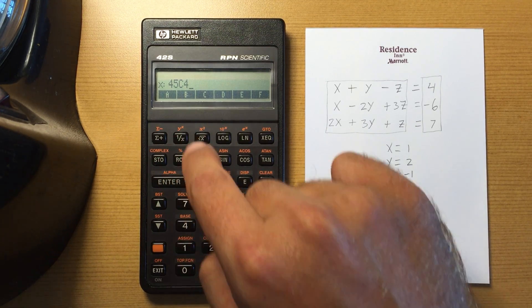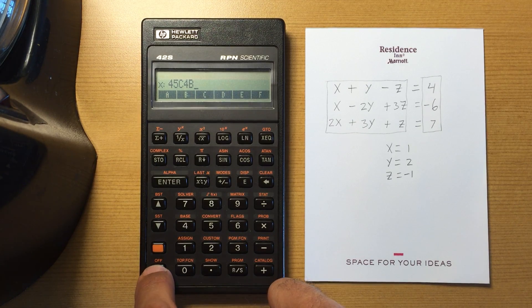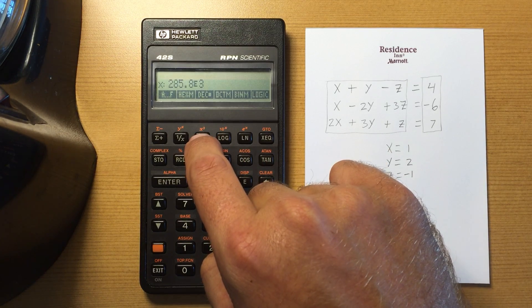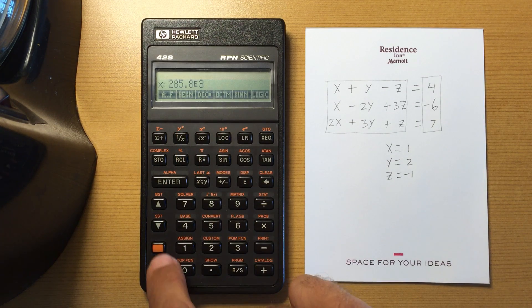Then I can hit exit to back out of that menu, go to my previous menu, and then convert that to a decimal number. Now that says 0.8 times 10 to the third.